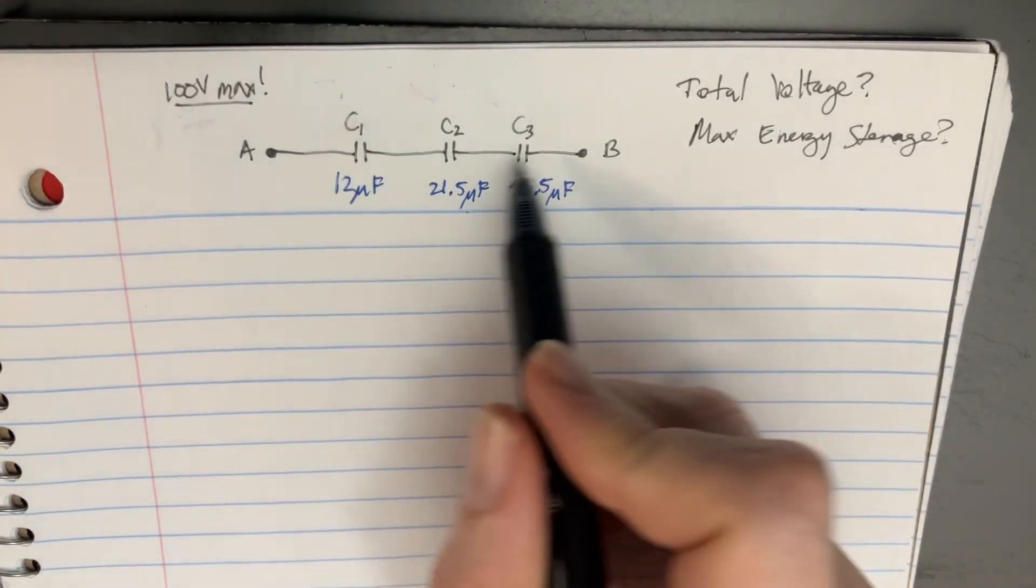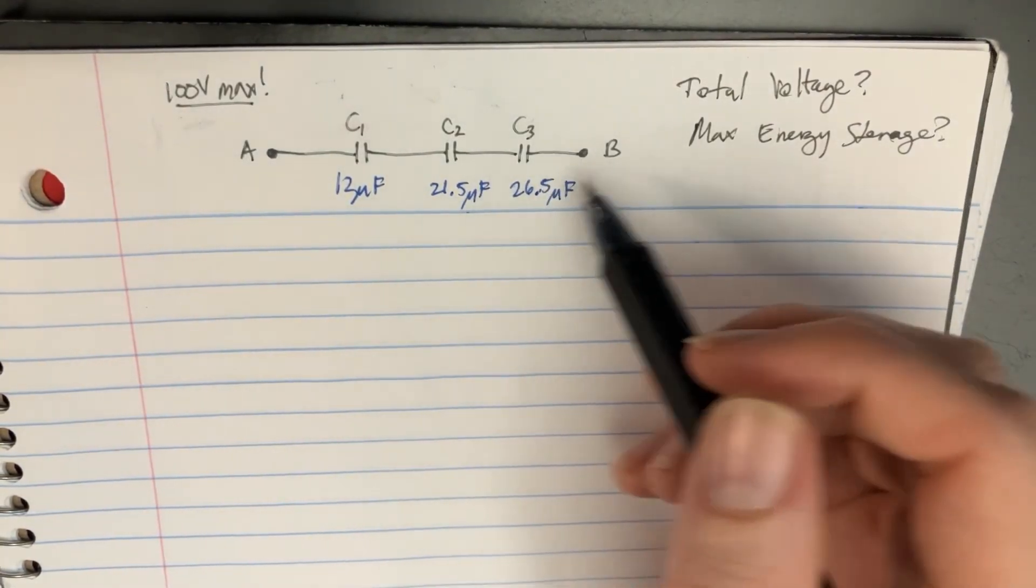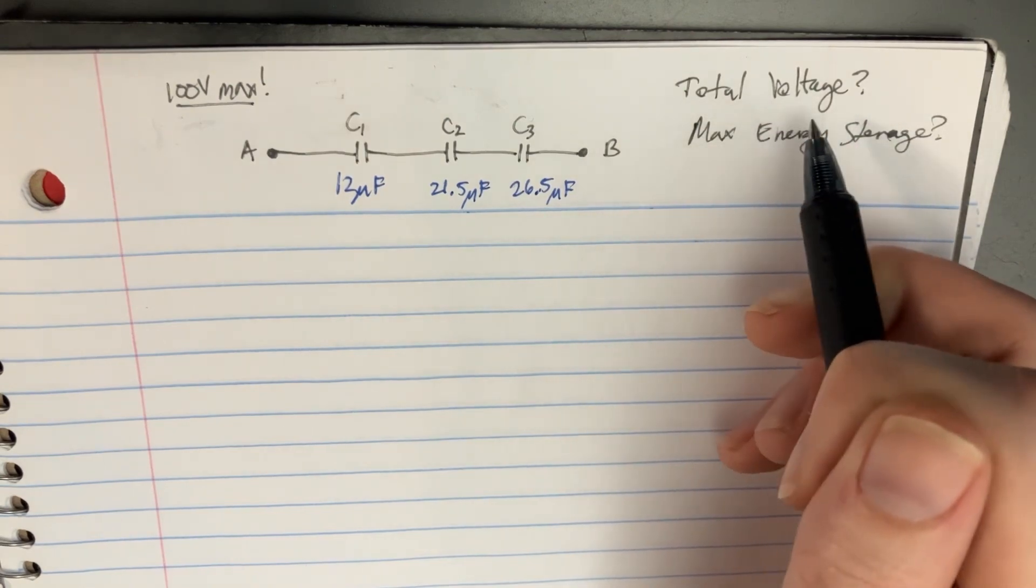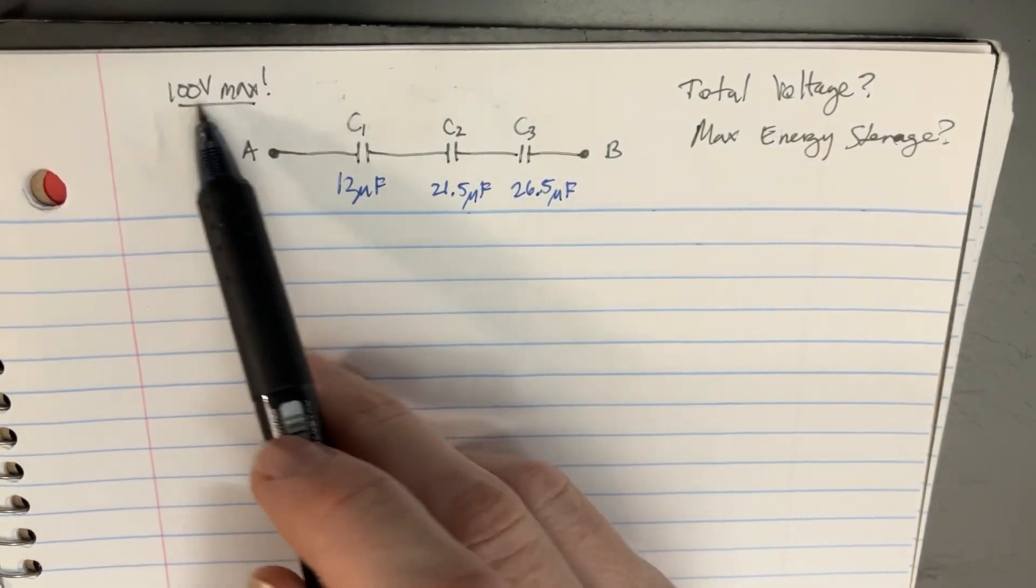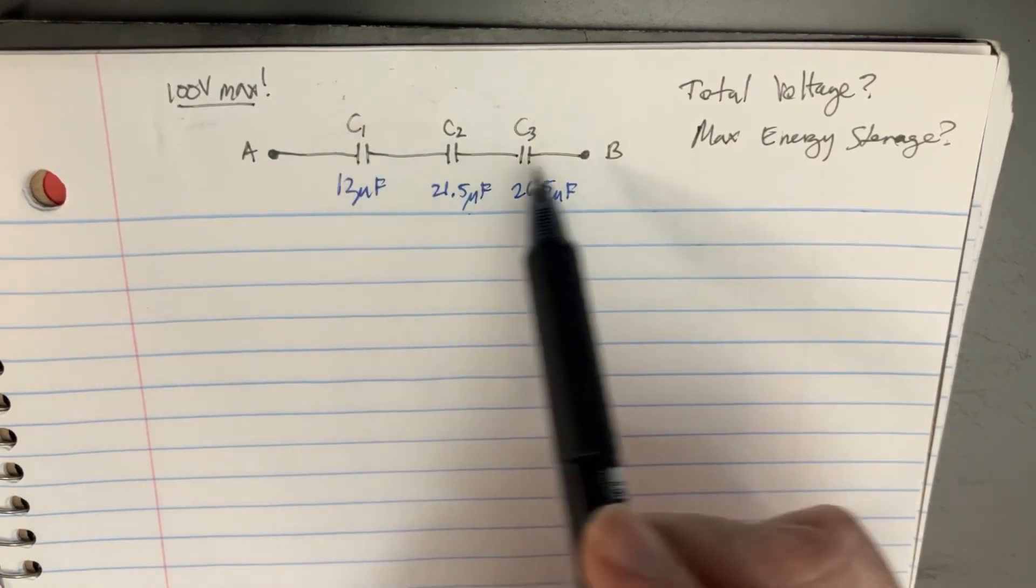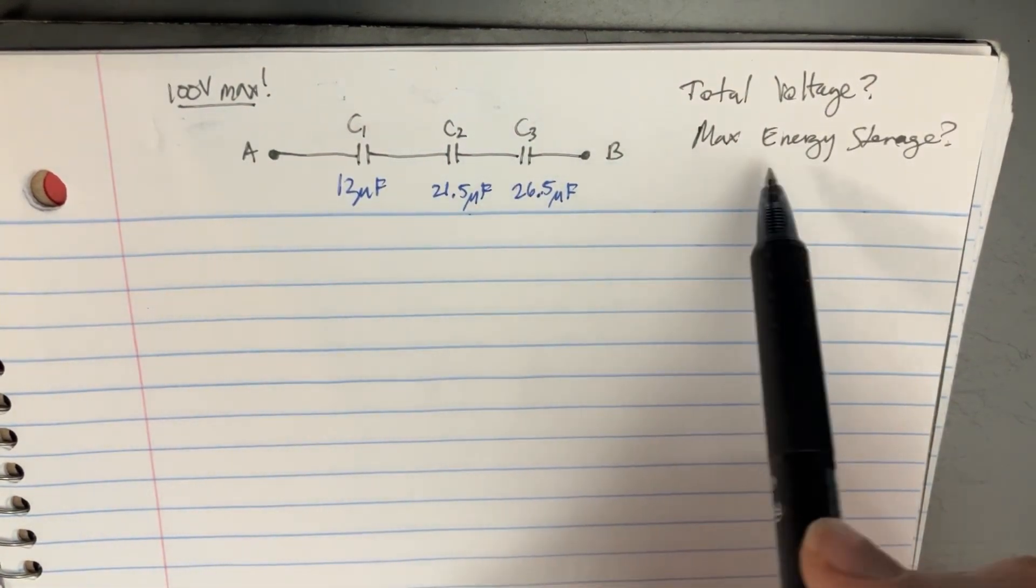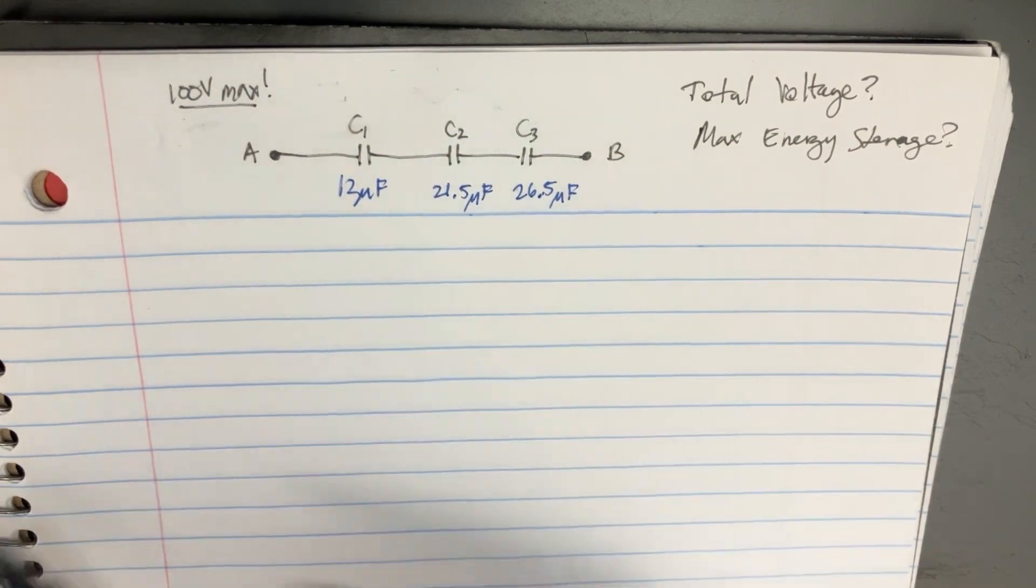We're given this series of capacitors here, and we're asked to find the total voltage that we could do across this entire thing if we know that each one of these can only have a maximum of 100 voltage. Then we're going to try to find the maximum energy that's possible to store in that as well.